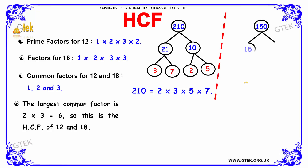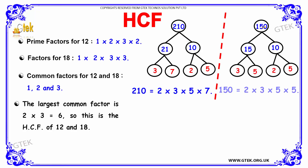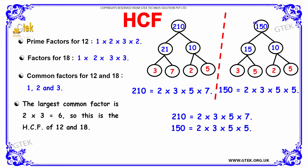Now we find the prime factorization of 150. We can write 150 as 15 multiplied by 10. 15 splits as 3 into 5, and 10 splits as 2 into 5. So the prime factors of 150 are 3 into 5 into 2 into 5, which multiply to give 150. This is the prime factor list of 150.